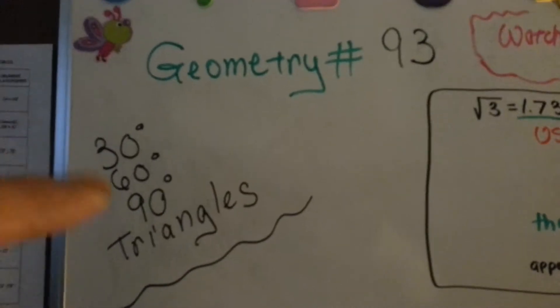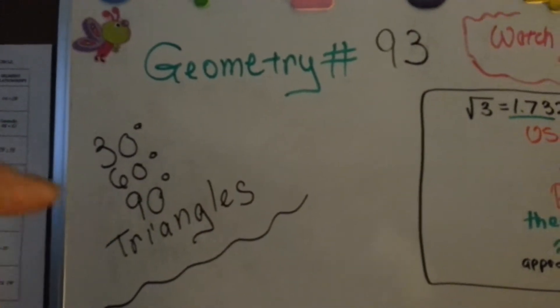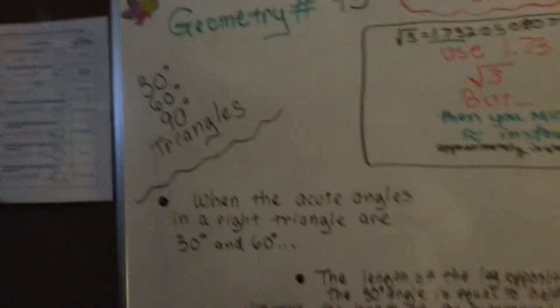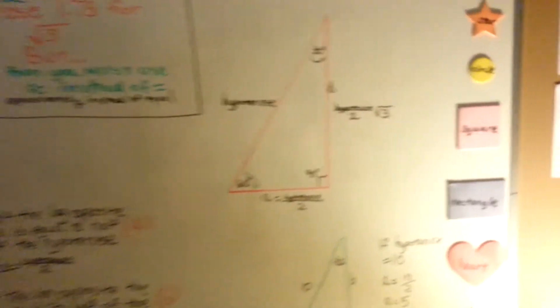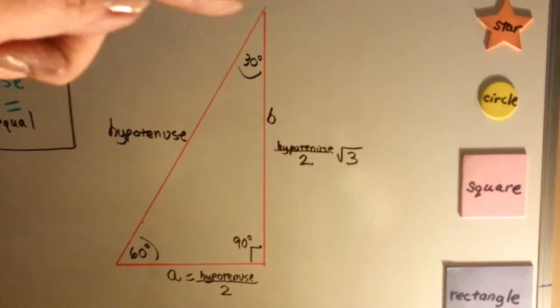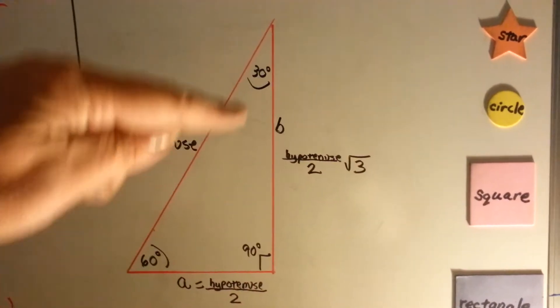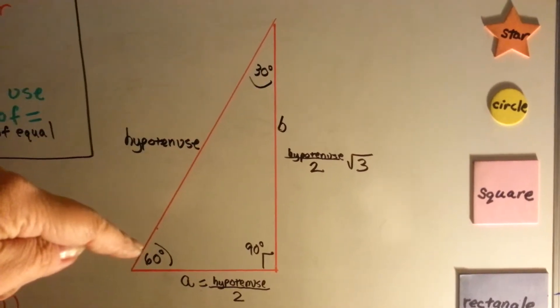Triangles that are right triangles because of the 90, that have a 30 and 60 degree acute angle. So we're going to take a look at this drawing right here. This is a right angle, you can tell from the little box here. This is a 30 degree and this is the 60 degree angle.